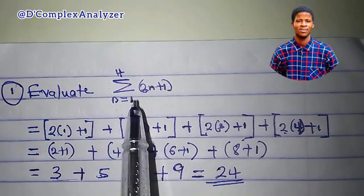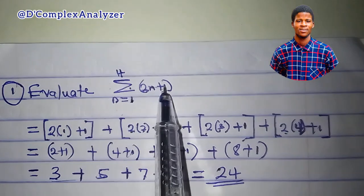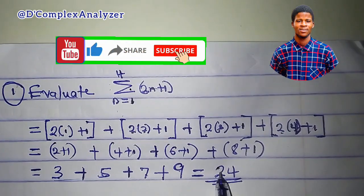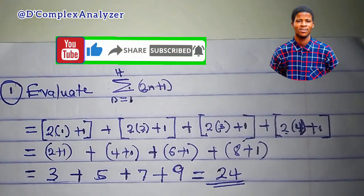That means, the summation of the expression 2n plus 1, from n equal to 1 to 4, is equal to 24. It's as simple as this.